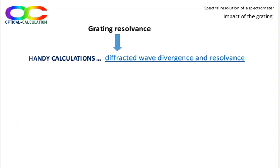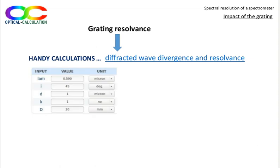We can calculate the resolvance of the grating, which is the ratio between the wavelength and the smallest resolvable wavelength variation with this handy calculation, diffracted wave divergence and resolvance for a reflective grating. The grating is 20 mm by 20 mm, so the maximum beam diameter, which is the upper case D parameter, is 20 mm. The grating pitch, which is the lower case d parameter, is 1 micron.